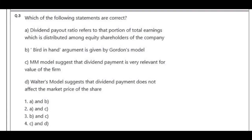Which of the following statements are correct? A. Dividend payout ratio refers to that portion of total earnings which is distributed among equity shareholders of the company. B. Second burden and argument is given by Gordon model. C. MM model suggests that dividend payment is very relevant for value of firm. D. Walter model suggests that dividend payment does not affect the market price of the share.